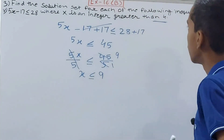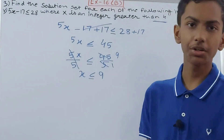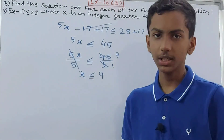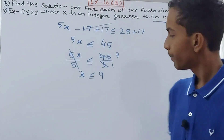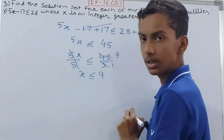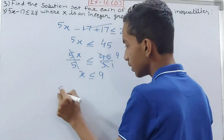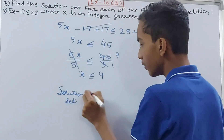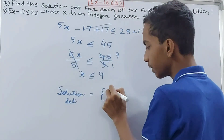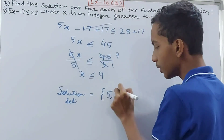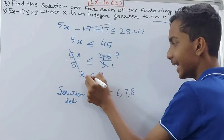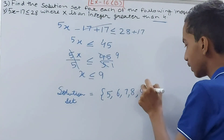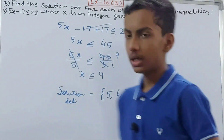The condition is that x is an integer greater than 4. Integers greater than 4 are 5, 6, 7, 8, 9, and so on, but we only go up to 9 since x ≤ 9. Since it is less than or equal to 9, we include 9 as well. So the solution set is {5, 6, 7, 8, 9}.